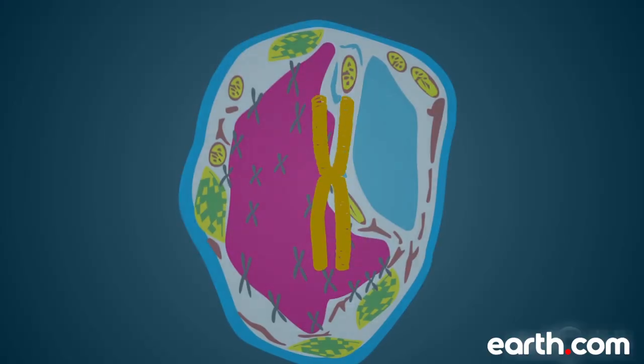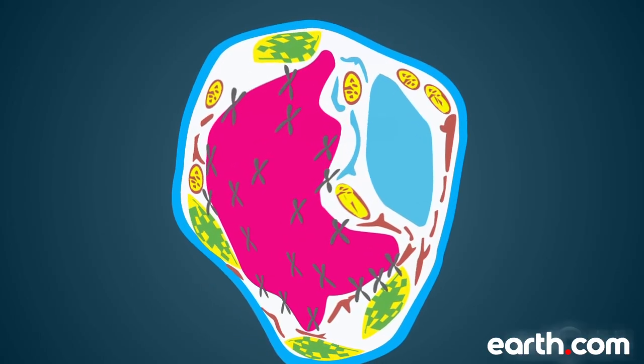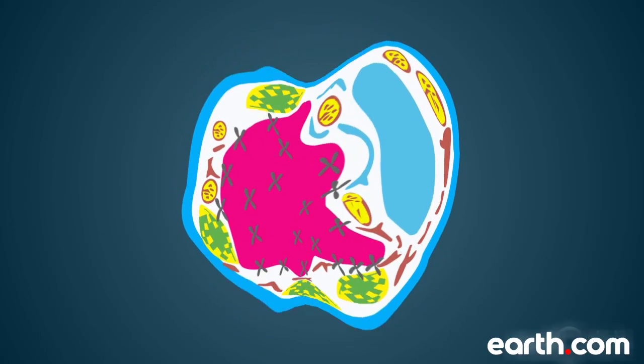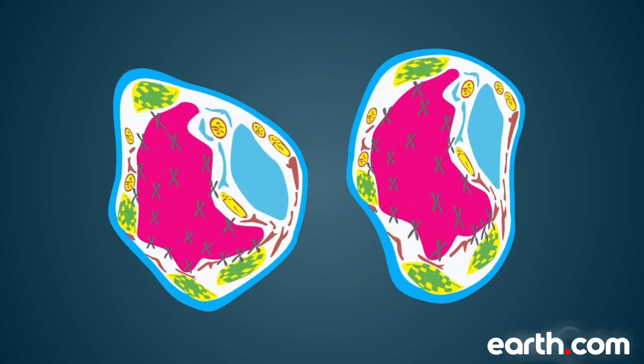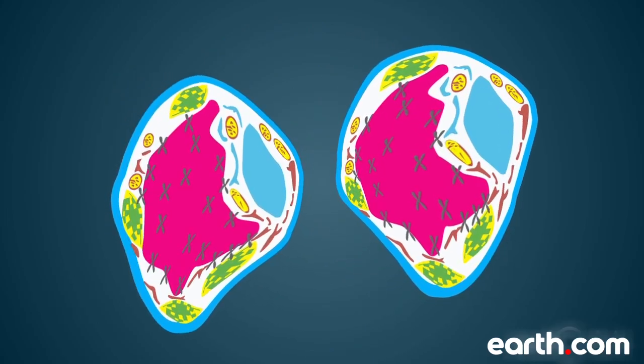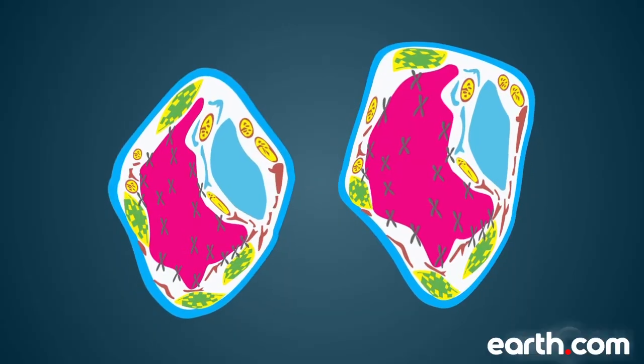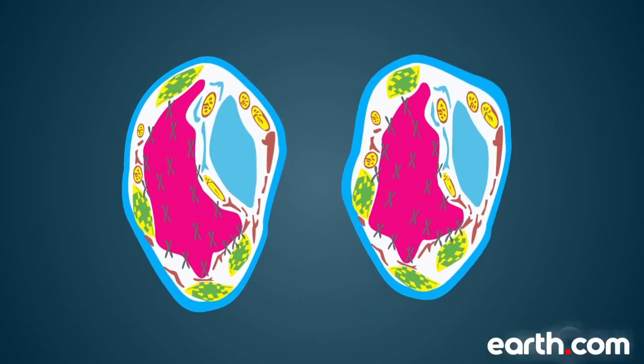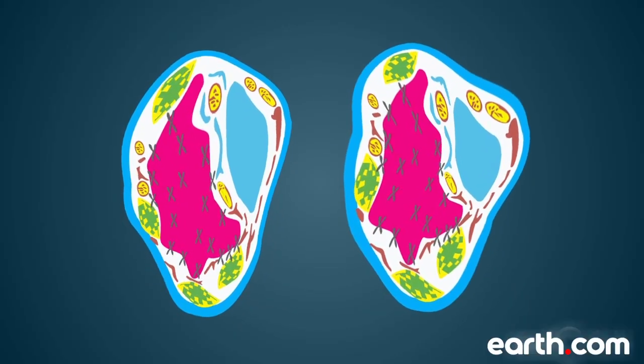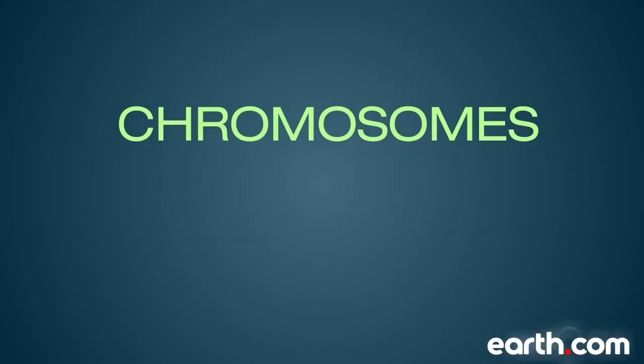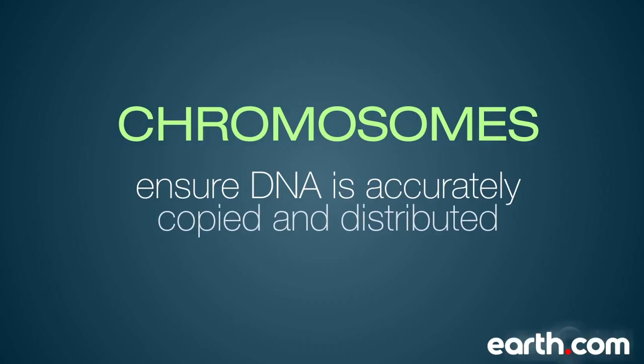For an organism to grow and function properly, cells must constantly divide to produce new cells to replace old worn-out cells. During cell division, it's essential that DNA remains intact and evenly distributed among cells. Chromosomes are a key part of the process that ensures DNA is accurately copied and distributed in the vast majority of cell divisions.